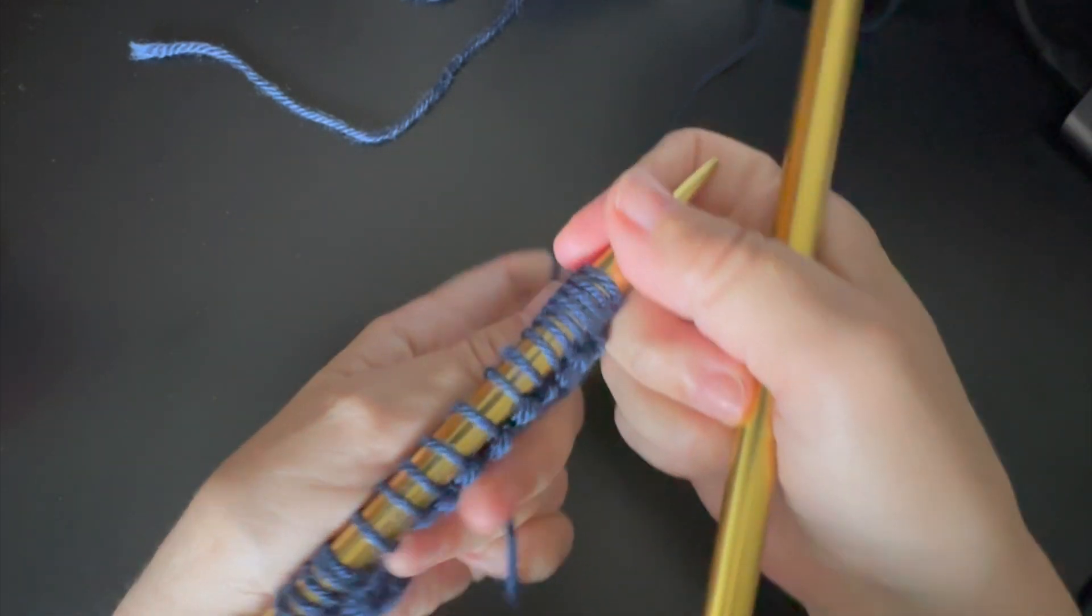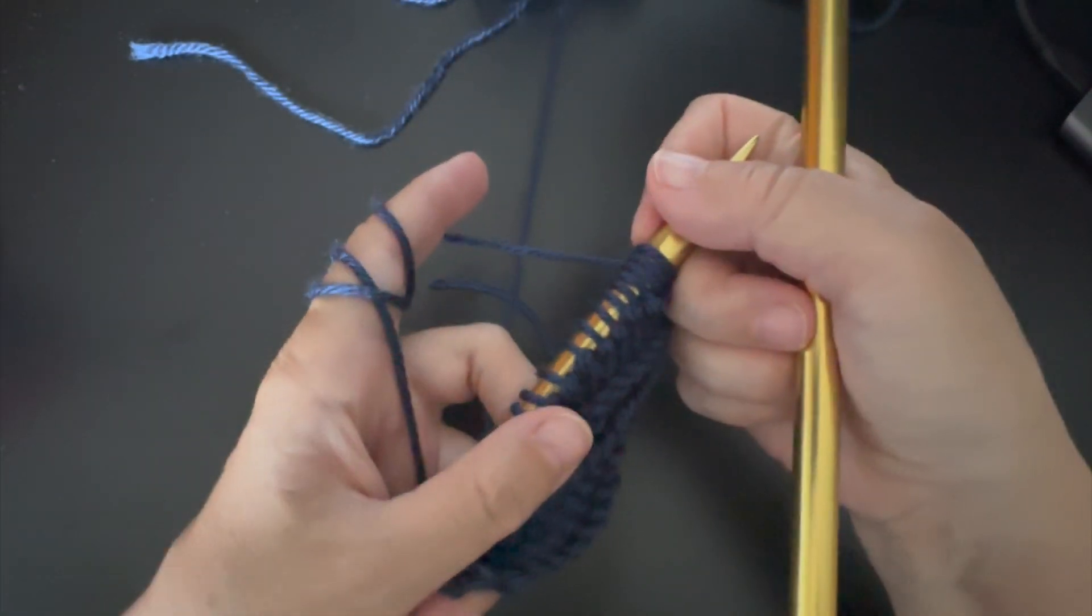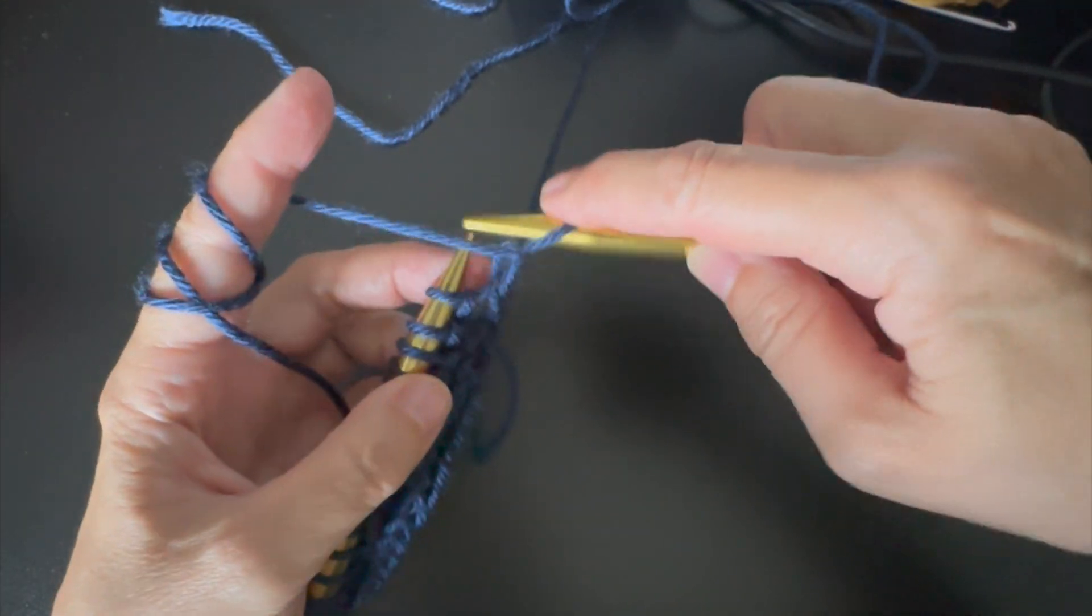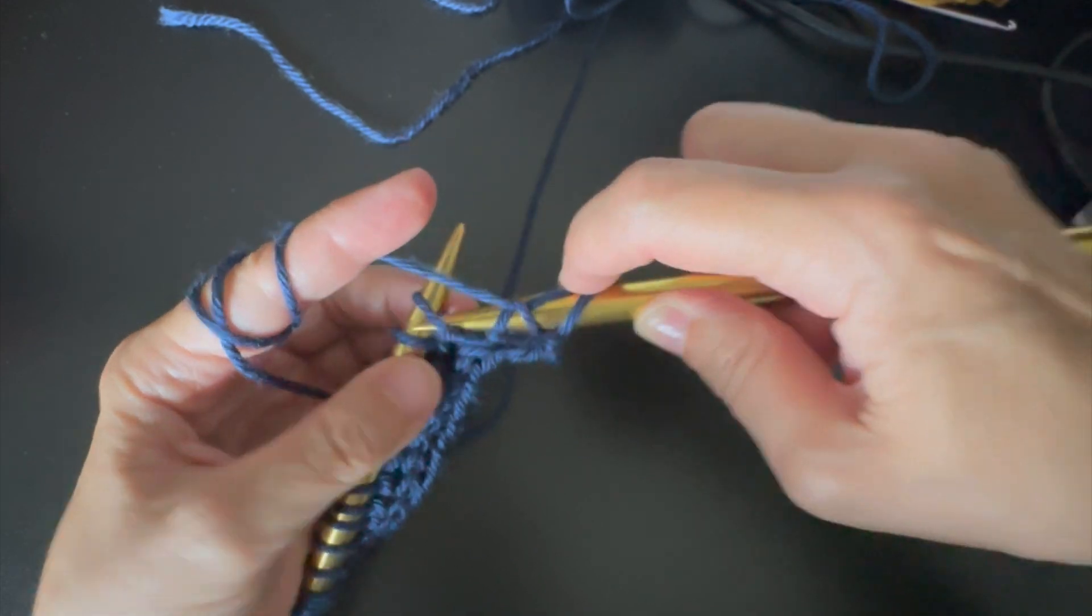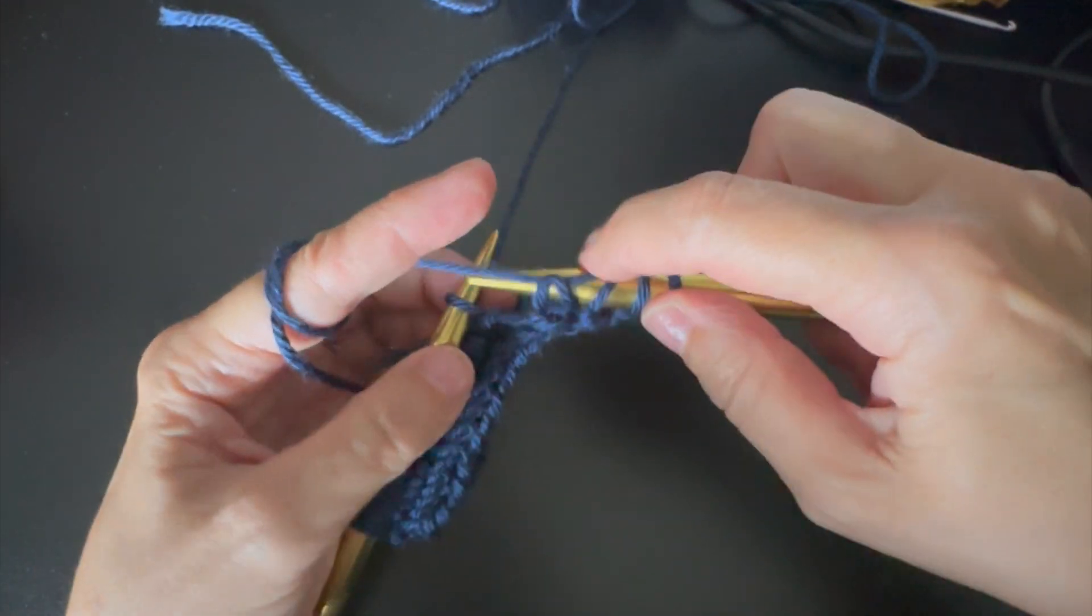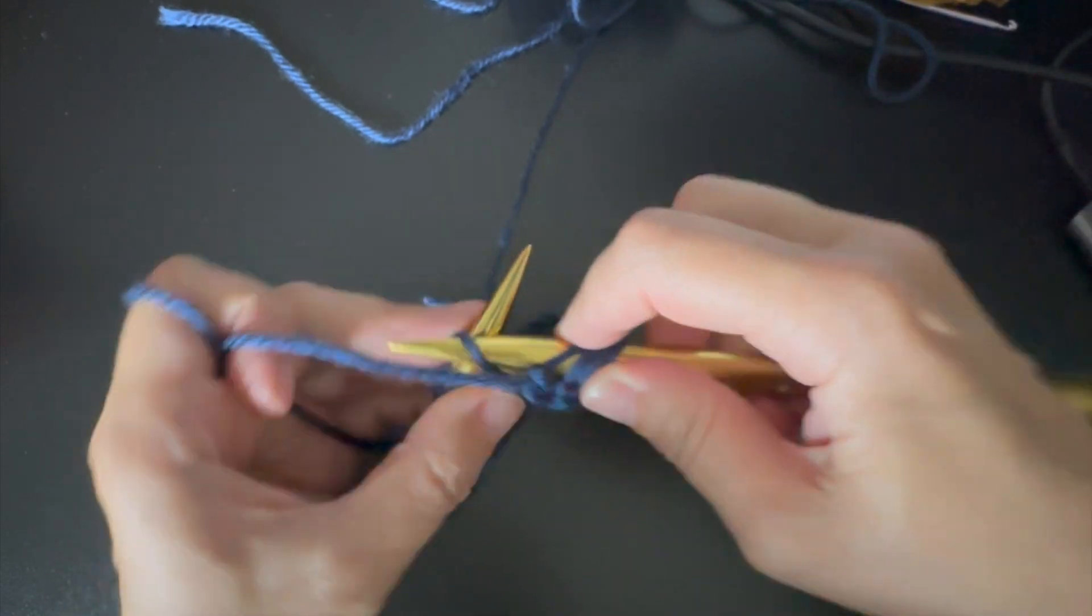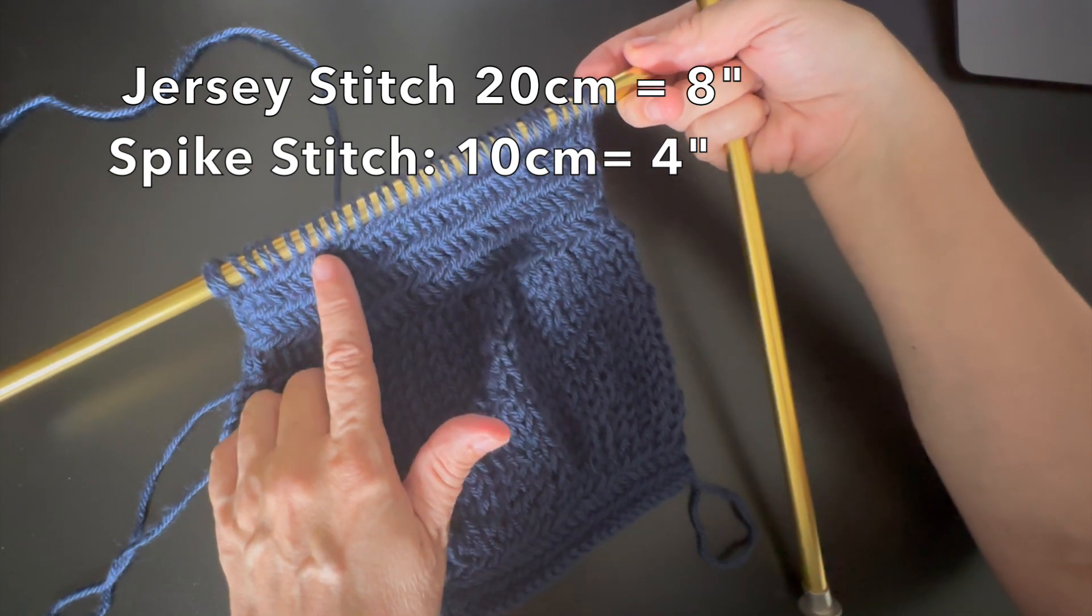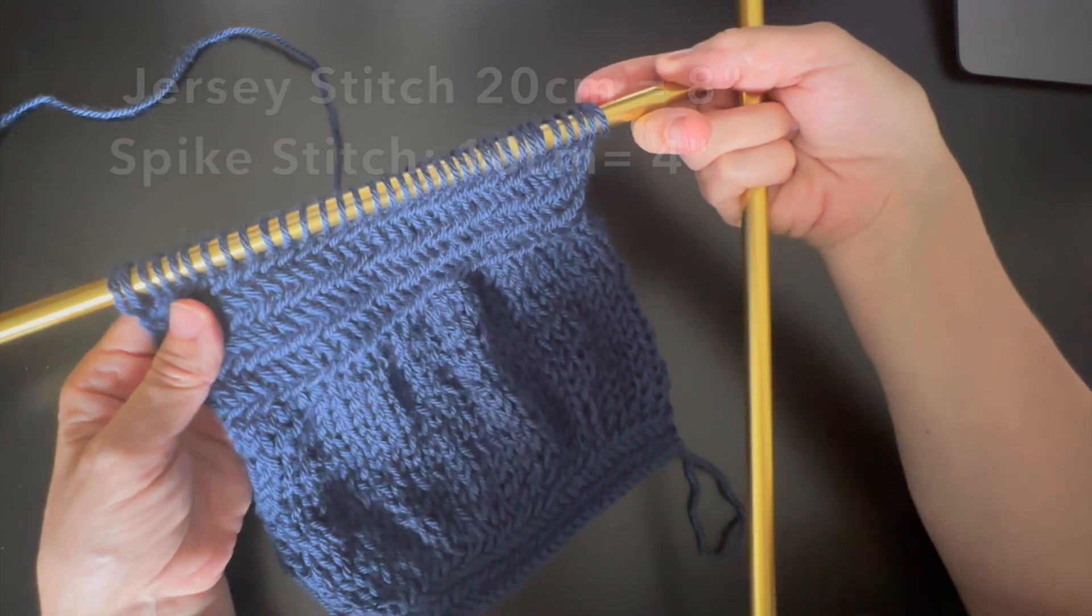Turn the work and we'll continue with the next row doing purl, and then after this we'll continue with knitting and then purl. This will be the jersey stitch until I get around 20 centimeters of jersey stitch, and then I will do another section with the spike stitch of about 10 centimeters.